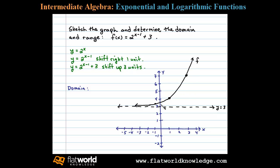Once we have a rough sketch of f, we can determine the domain and range. The domain is the set of x values for which the function is defined. From the graph, the function is defined for all x values, so the domain is all real numbers, written in interval notation as negative infinity to infinity. The range is the set of all y values. Since y equals 3 is the horizontal asymptote and the lower bound, all y values are greater than 3, giving us the interval from 3 to infinity.